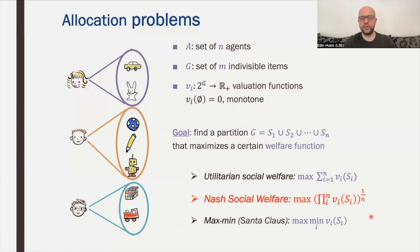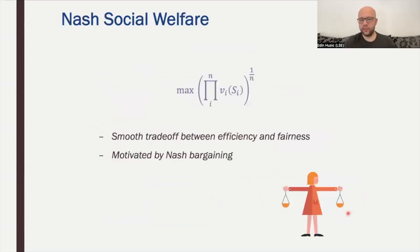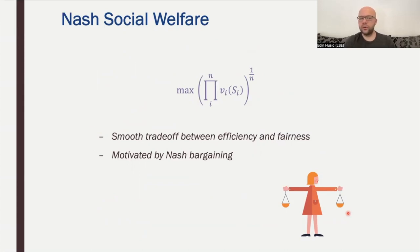In Nash social welfare, the goal is to partition the items and give them to agents in order to maximize the geometric mean of agents' valuations. We want to study Nash social welfare because it provides a very good trade-off between efficiency — utilitarian social welfare — and fairness — the maximin welfare. This objective has also been motivated by Nash bargaining games, proportional fairness in networking, and competitive equilibrium from equal incomes.